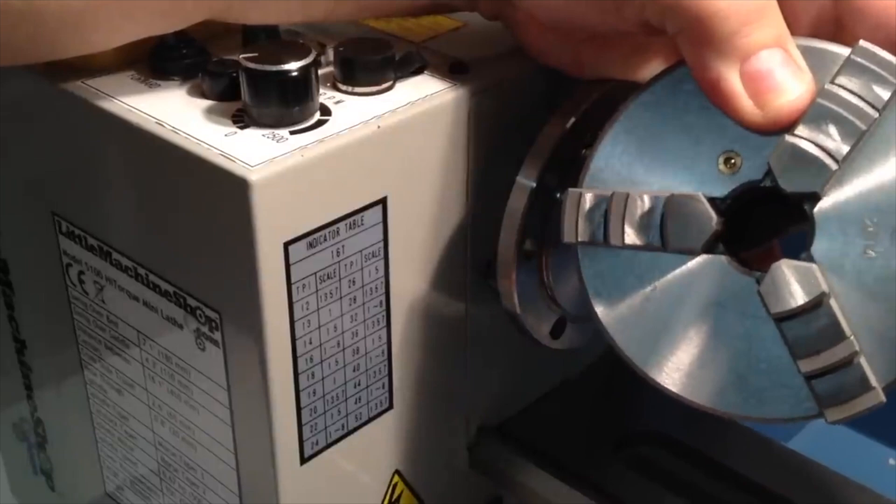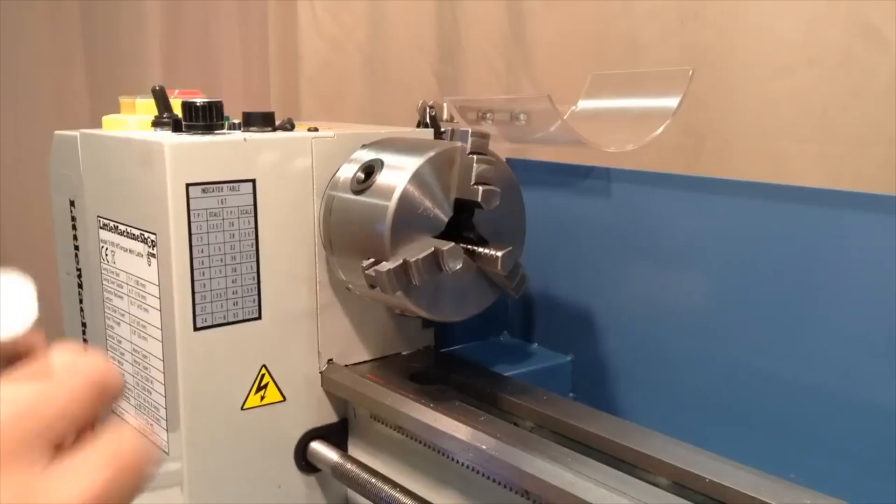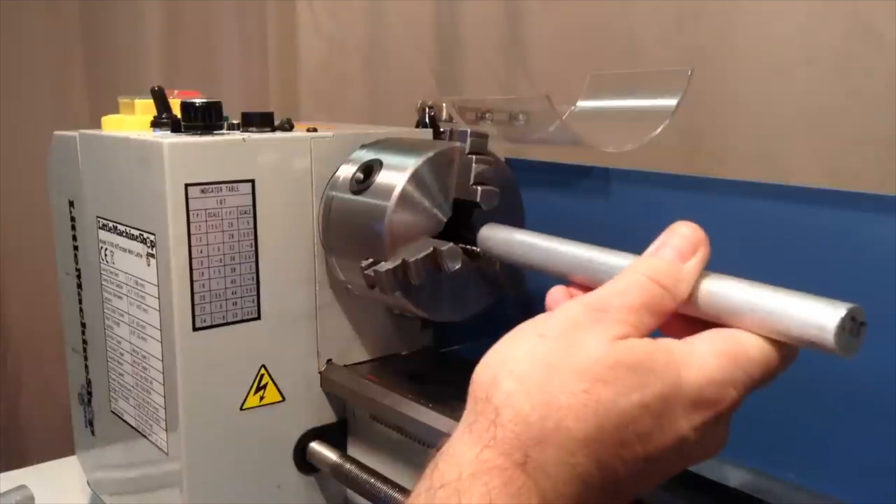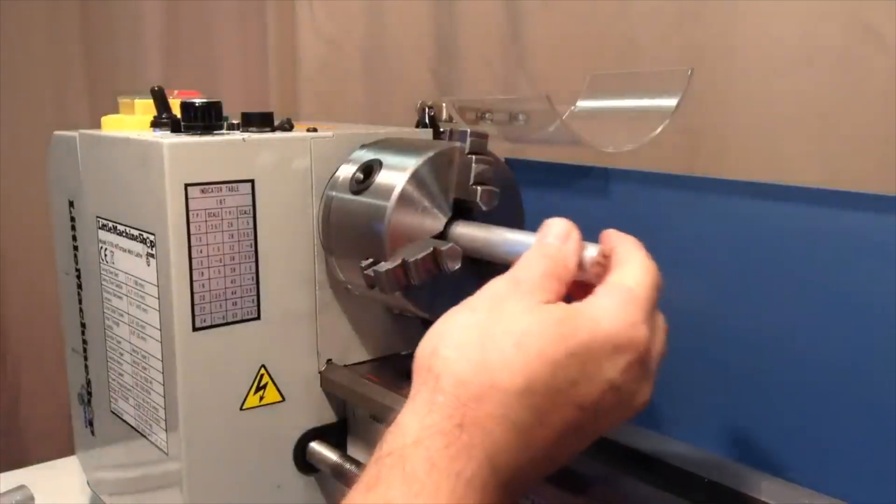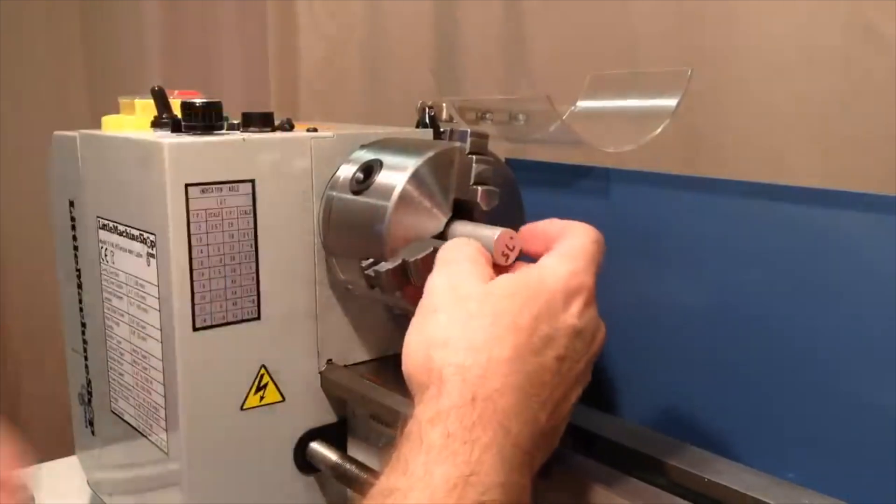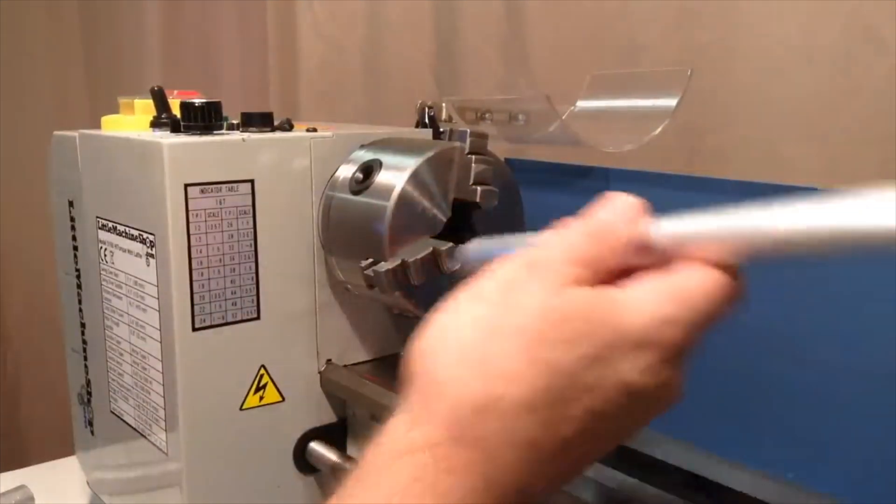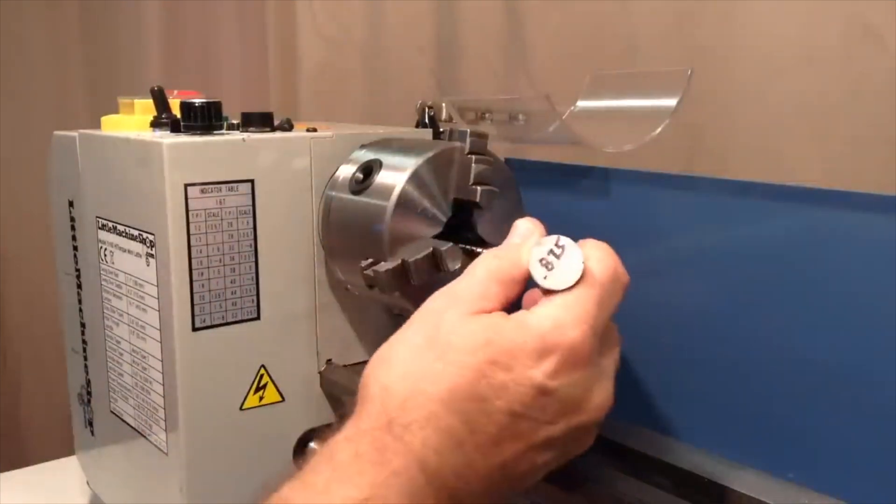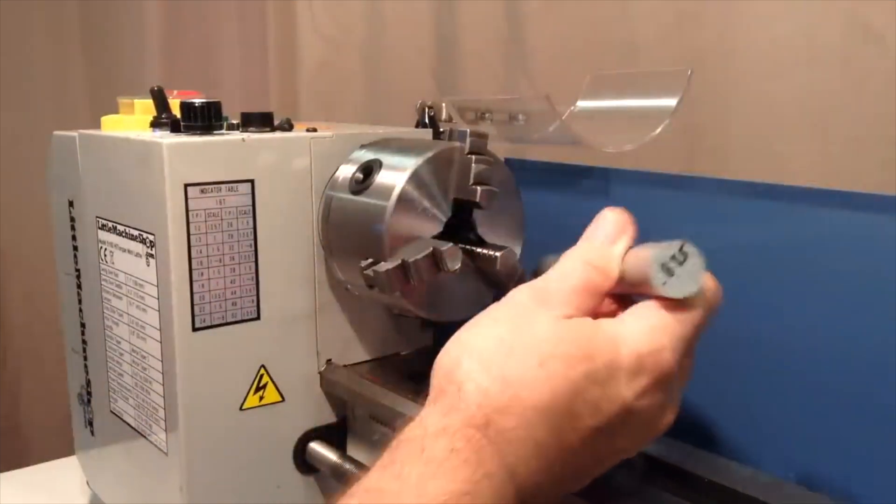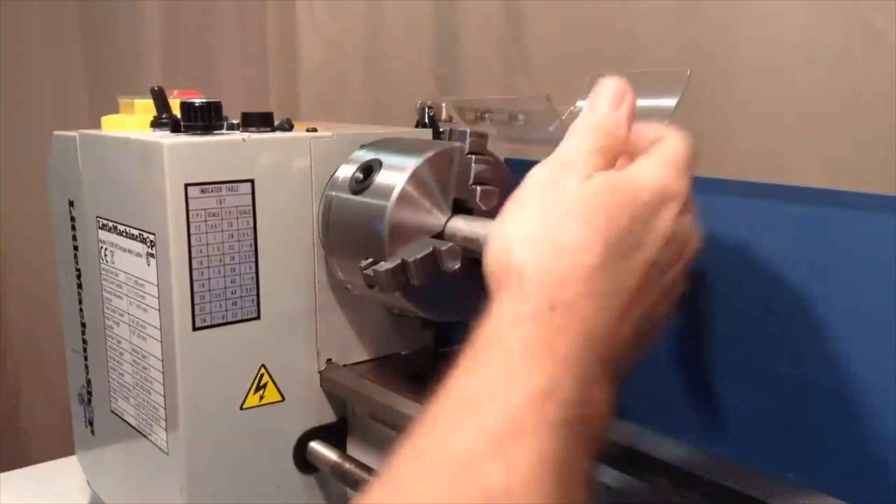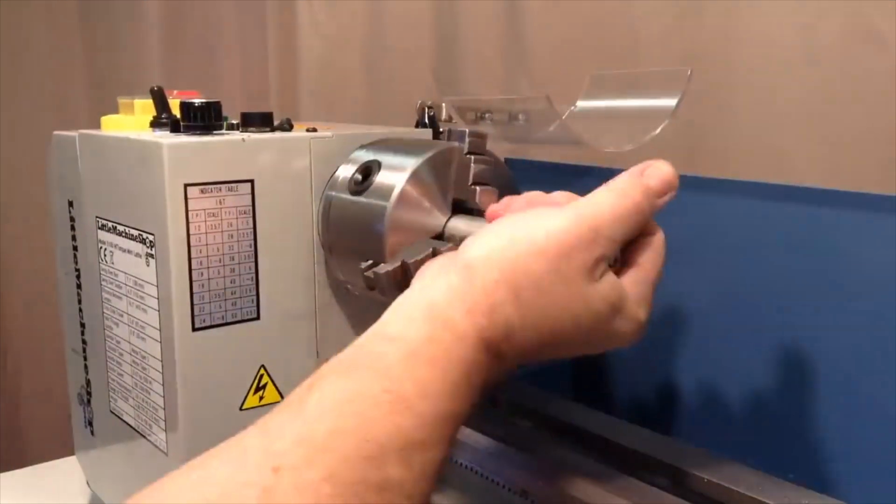On this lathe we can take a piece of three quarter inch diameter stock and it will fit easily through the through hole in the chuck and the through hole in the spindle. So that's nice. I thought I would try that with a piece of seven eighth inch diameter, and it will fit through up to a point but it runs into resistance as it gets back in here a little ways.